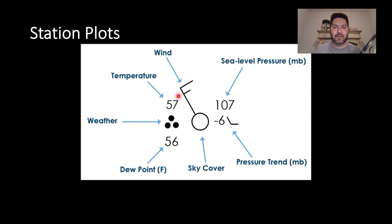Moving counterclockwise, you see this 57. That's just the air temperature at the surface. So that's one of the more easy ones to identify.